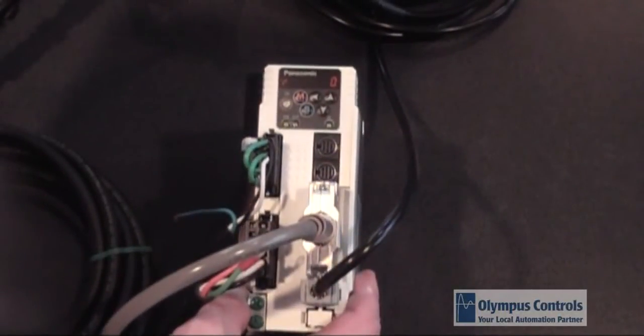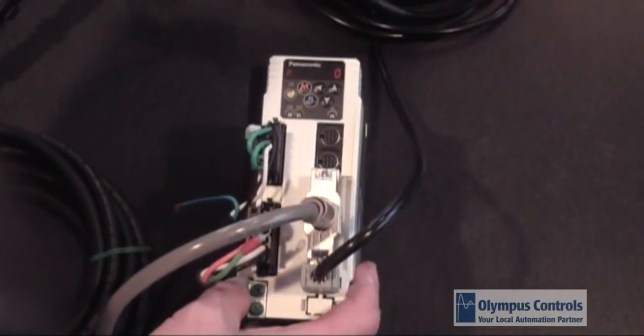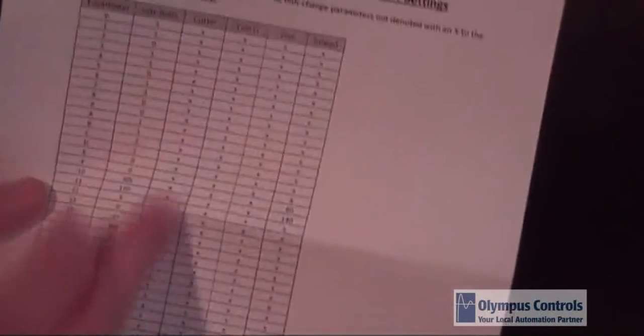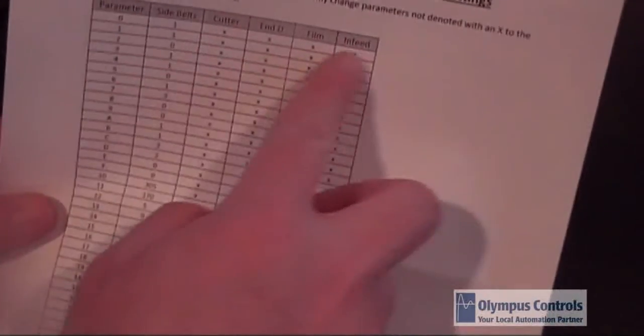If it was one of the other axes—a cutter, an ND, a film, or an infeed—you'd refer to the documentation and then change the parameter that is anything other than an X. As you can see in our list, most of the axes require very little changes from the original side belt that's pre-configured.